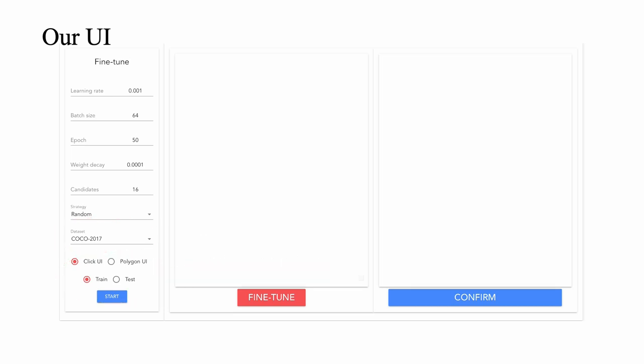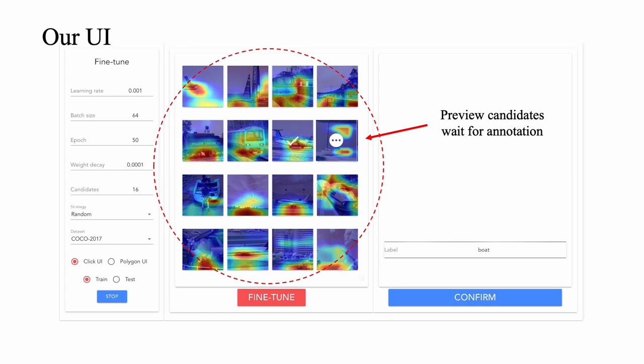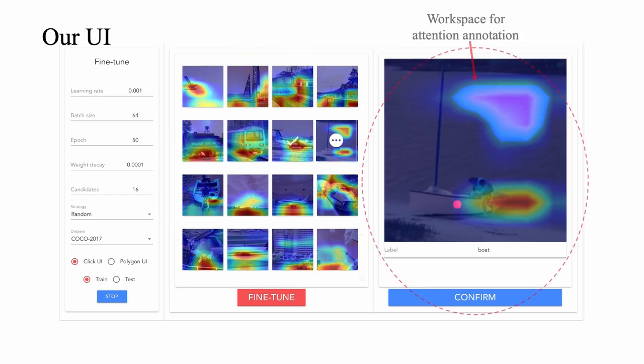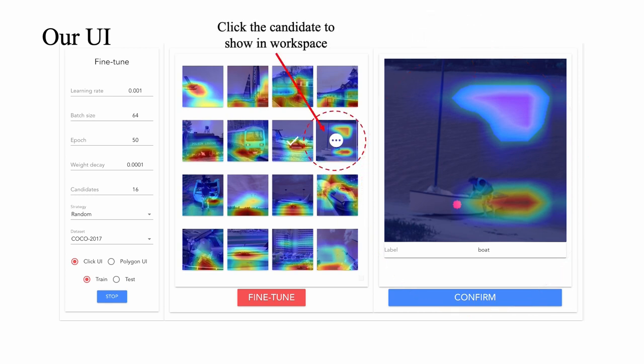The middle area is used to preview the data prepared by the system that requires the user to perform annotation work. Users access the right workspace by clicking on the candidate and use left and right clicks to annotate the attention.